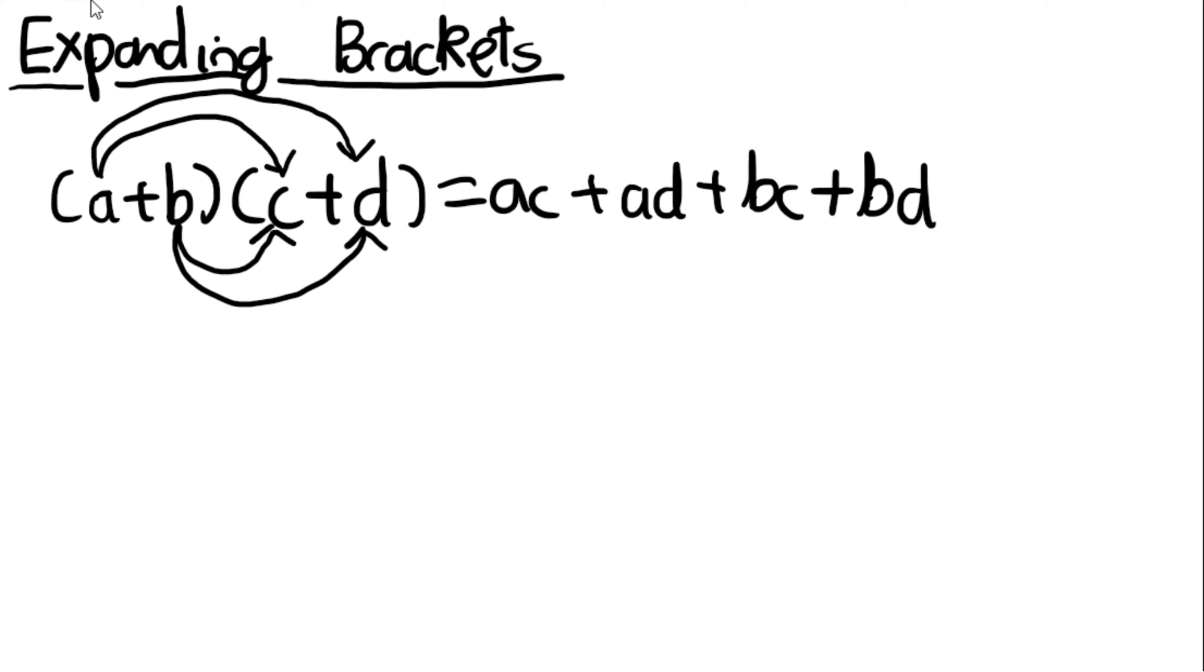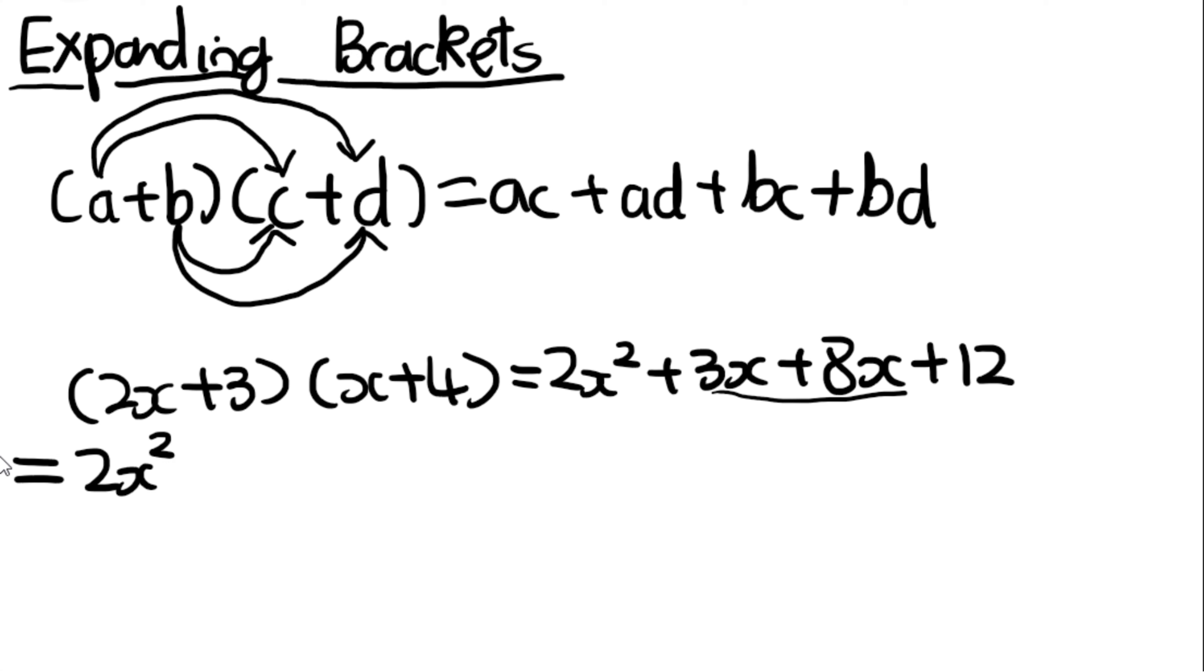So let's put this into number form. 2x plus 3 and in the other bracket, we'll do x plus 4. 2x times x is 2x squared, 3 times x is 3x, 2x times 4 is 8x, and 3 times 4 is 12. We can simplify this because we have like terms here, and we can write this as 2x squared plus 11x plus 12.